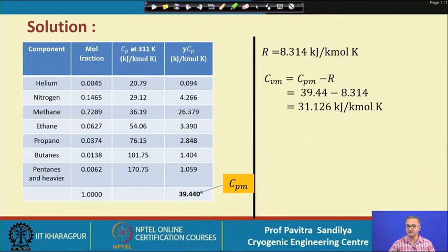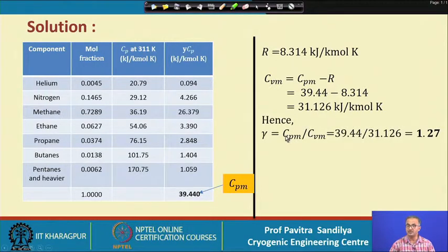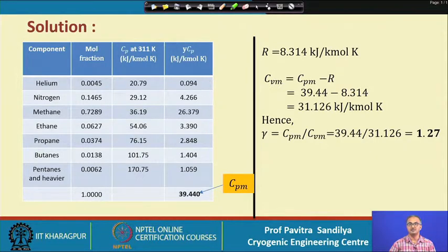After finding the specific heat value of the mixture at constant pressure (Cp), we find the specific heat at constant volume (Cv) for the same mixture. Using the ideal gas assumption, we subtract the value of R from Cp to get Cv, and to find the heat capacity ratio γ we simply take the ratio of Cp to Cv. This is a very straightforward problem to find out the specific heat capacity ratio.